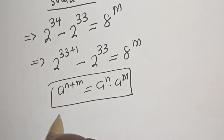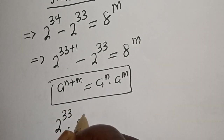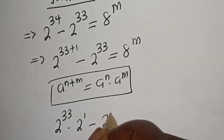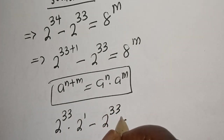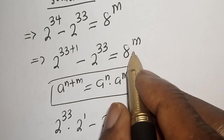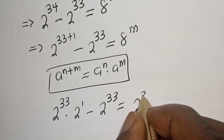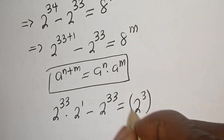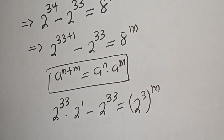This can be written as 2 raised to power 33 multiplied by 2 raised to power 1, minus 2 raised to power 33, is equal to 8 raised to power m. And 8 raised to power m can be written as 2 raised to power 3, to the power of m.